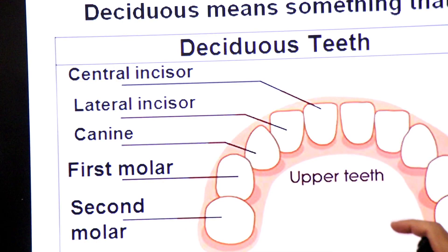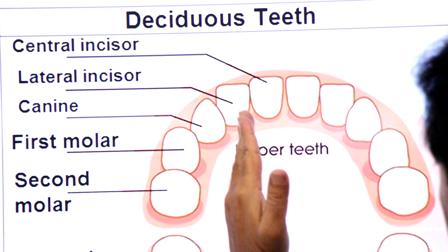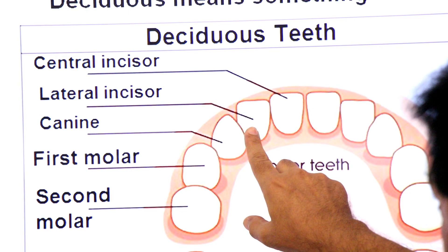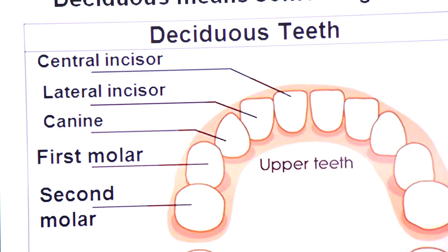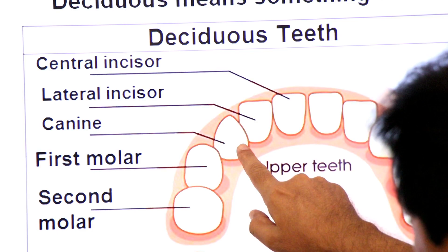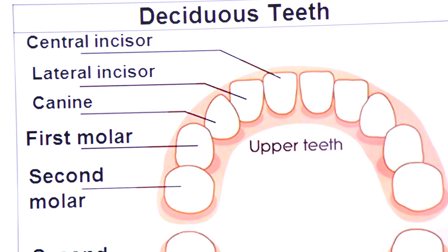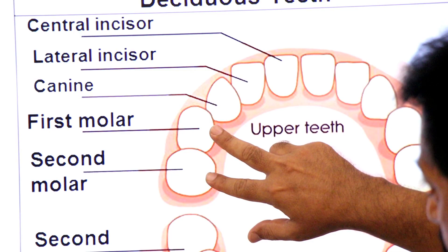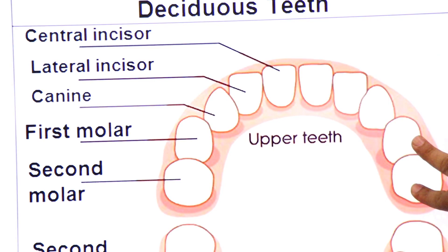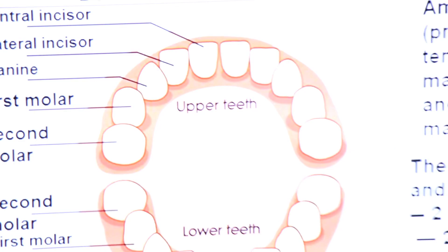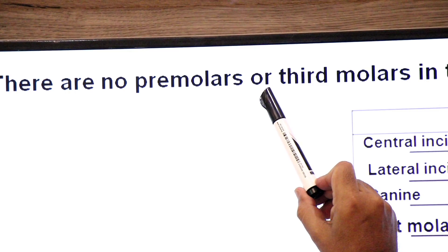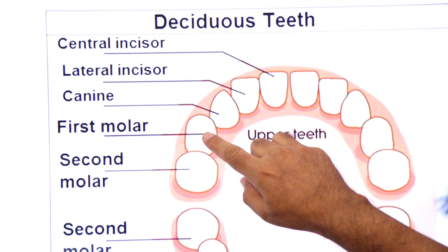Looking at the upper jaw, there are central incisors and lateral incisors — 4 incisors in the upper jaw and 4 in the lower jaw. Then there is one pointed canine tooth — 1 in the upper right half and 1 in the upper left half, making 2 canines in the upper jaw and 2 in the lower jaw, totaling 4. In children there are no pre-molars, but there are first molars and second molars — 4 in the upper jaw and 4 in the lower jaw — making 20 teeth in primary dentition.